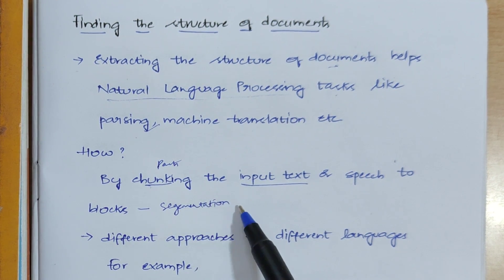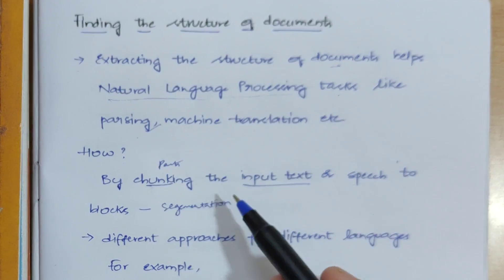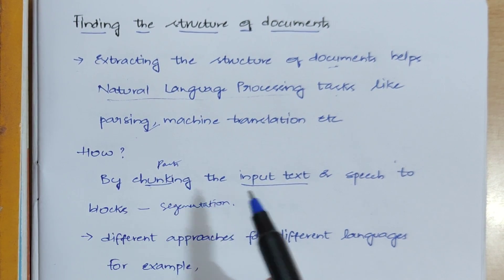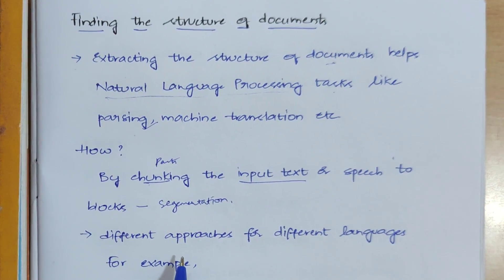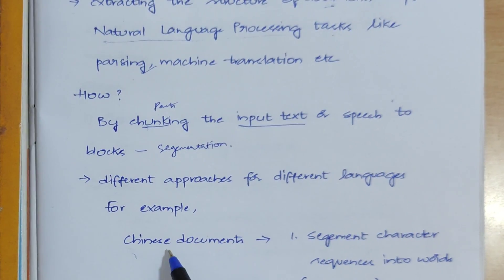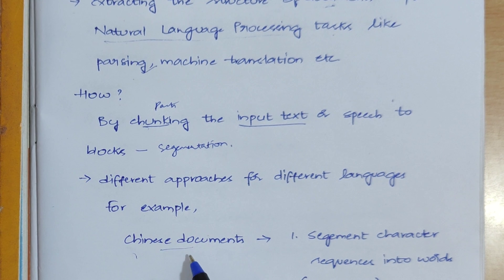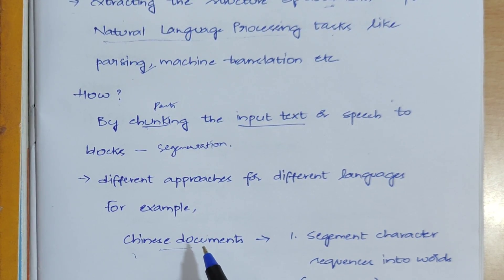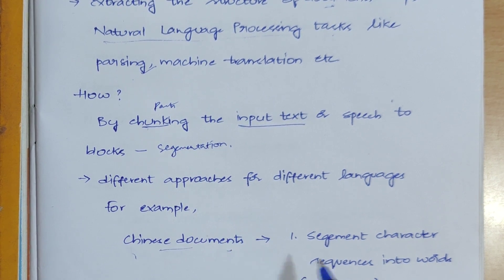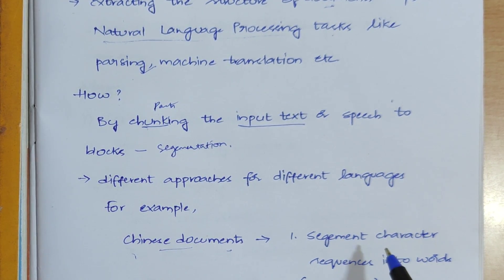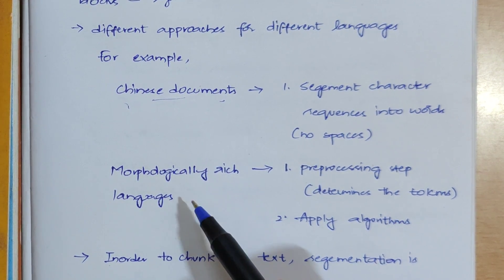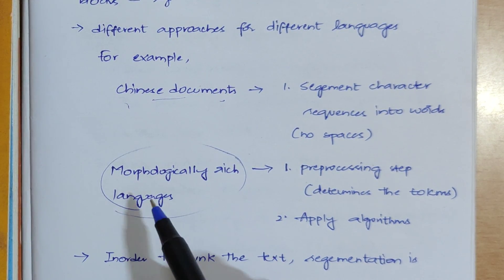For English language, we differentiate words by checking white spaces. But when it comes to other languages like Chinese documents, there are no white spaces, so you can't segment words by spaces. What you do instead is segment character by character in order to get that particular word.